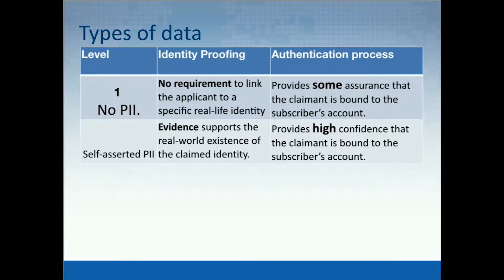Security level two is for those applications that contain self-declared personally identifiable information or any other type of online data — this can be anything from email addresses, postal addresses, a picture, any evidence that can trace back to a real-life specific person. The authentication assurance for this type of application should provide a high confidence that the claimant is bound to the subscriber's account.